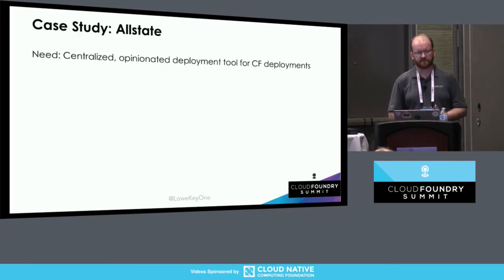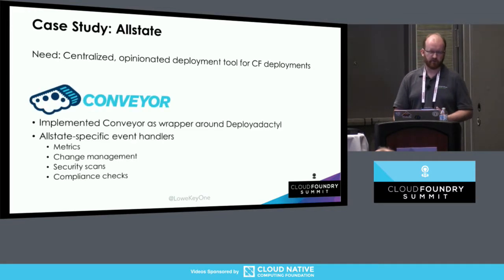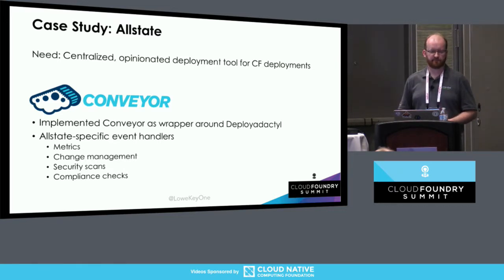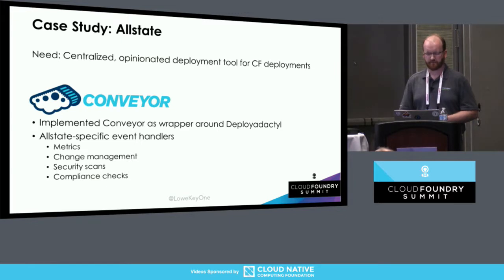So what we've done at Allstate is we had the need for a centralized automated deployment tool that would handle blue-green stuff. We built out DeployDactyl, but on top of that we built a wrapper around it that we ended up calling Conveyor, and it handles all of the Allstate-specific stuff - that's our change management, a lot of the metrics we track around deployments, and things like our security scans and compliance. That's all built just using the eventing system within DeployDactyl as event handlers that either do things directly within DeployDactyl or call out to other systems.